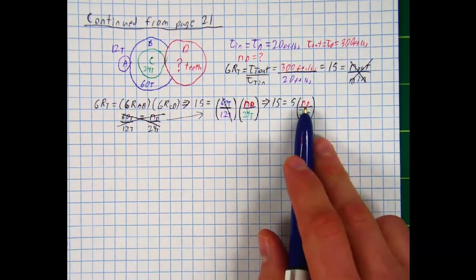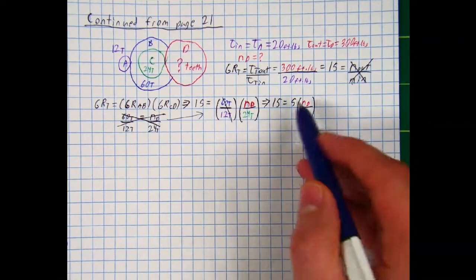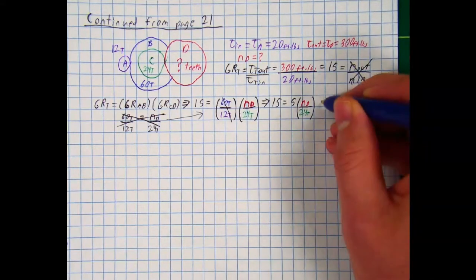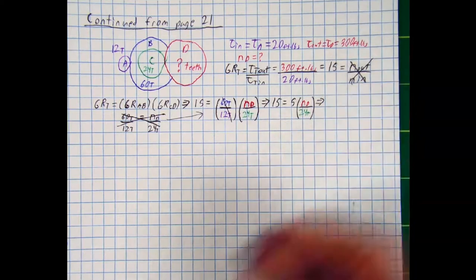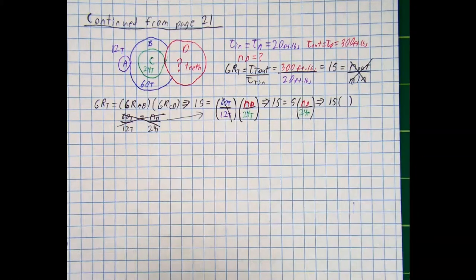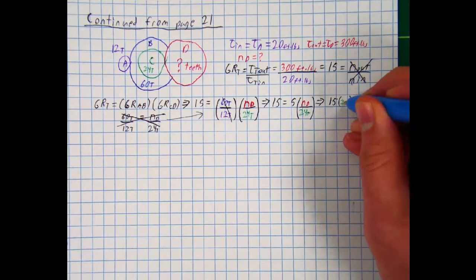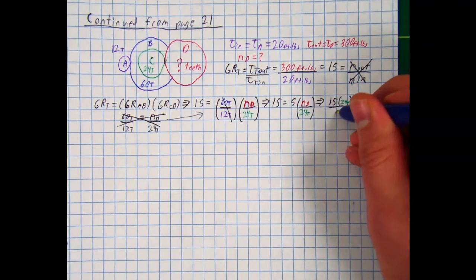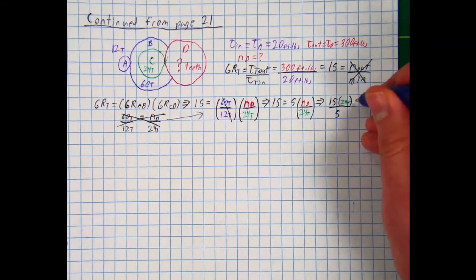And then I want to get number of teeth at D by itself. So to do that, I have to divide by 5 and then multiply by 24 teeth. And so I can rewrite this to say 15 multiplied by 24 teeth divided by 5. And that is equal to my number of teeth at D.